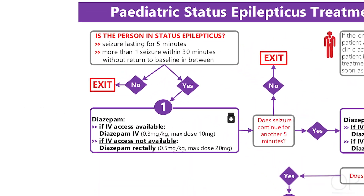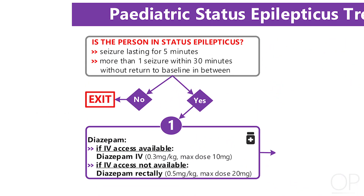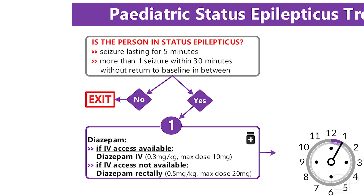The first rescue medication administered should be a benzodiazepine, preferably by an intravenous route. At five minutes of continuous seizure activity, you should first give diazepam IV at the dose of 0.3 milligrams per kilogram with a maximum dose of 10 milligrams. If the patient does not have IV access at this point, you can administer diazepam rectally, but note the different dose of 0.5 milligrams per kilogram with a maximum of 20 milligrams.